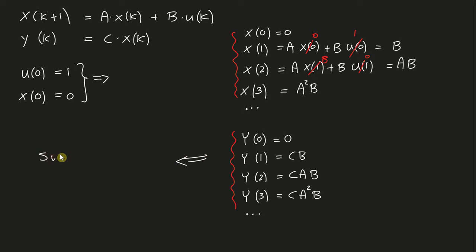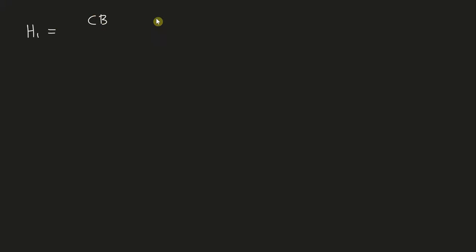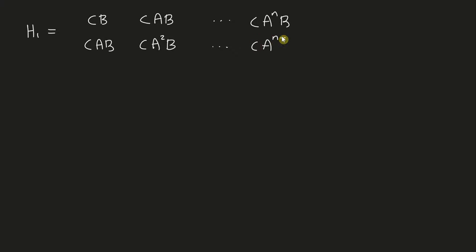Now I can substitute these into my original Hankel matrices. For the case of H1, I'm going to have C·B (which equals y₁), C·A·B (which equals y₂), and so forth. Pay very close attention to the exponents because these are critical to what we're going to do next. The rows continue, and we end up with C·Aˢ in the final row. So this is what my Hankel matrix looks like.